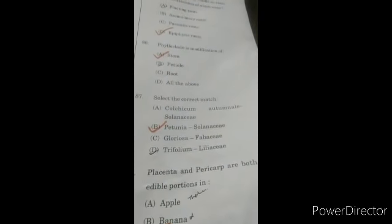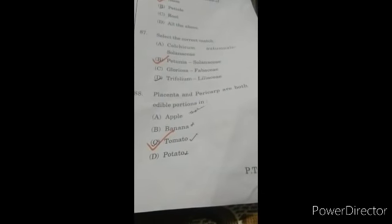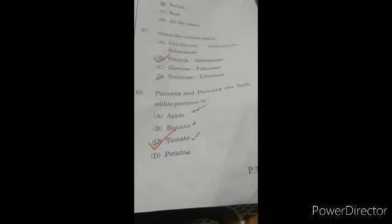Select the correct match: B, Petunia belong to Solanaceae family. Question 88: placenta and pericarp are both edible in tomato, C option.